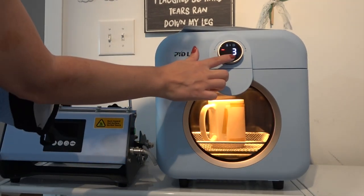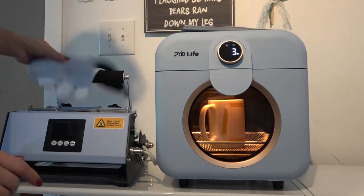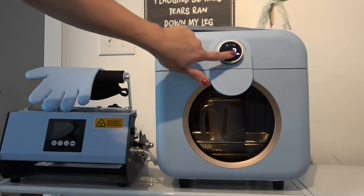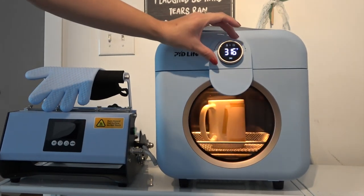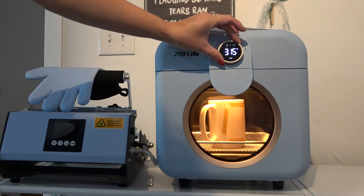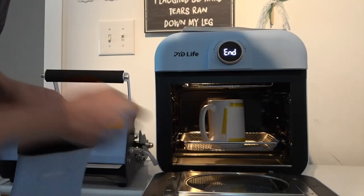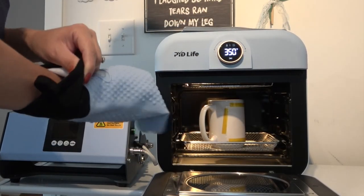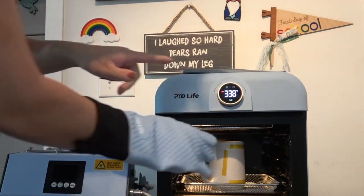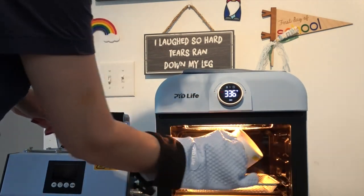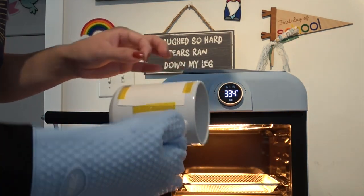So generally when it comes to mugs, it really only takes three minutes in the mug press. So I'm going to see what three minutes looks like for the sublimation oven. When the timer is done, the oven is going to start to beep. And so making sure that you have your silicone mitt on, we are going to check to see if the image transferred or not.